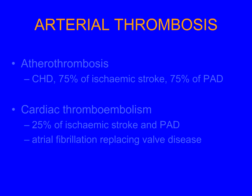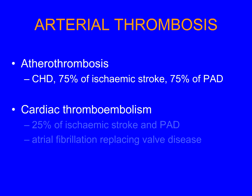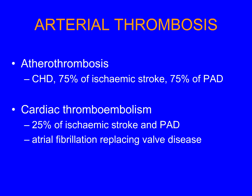Epidemiological studies have confirmed the pathology of arterial thrombosis. Atherosclerosis is responsible for most coronary heart disease, 75% of ischemic strokes, and peripheral arterial disease. Cardiac thromboembolism is an important cause — 25% of ischemic stroke and peripheral arterial disease. Over time, atrial fibrillation is becoming the commonest underlying pathology of cardiac thromboembolism, replacing valve disease as rheumatic heart disease becomes less common.